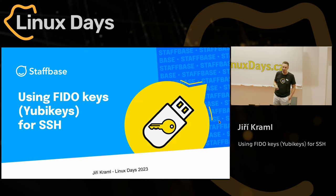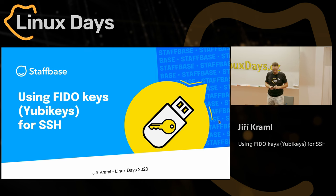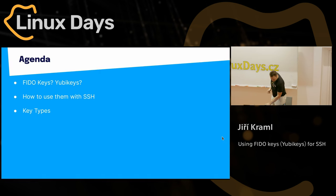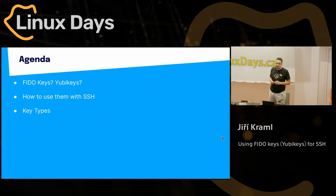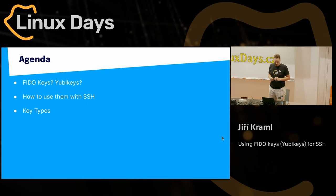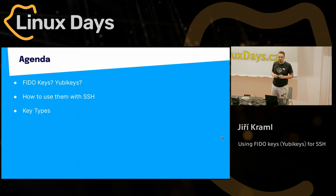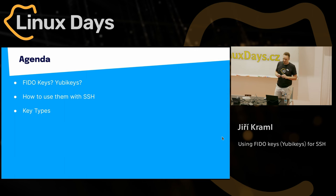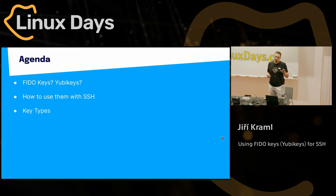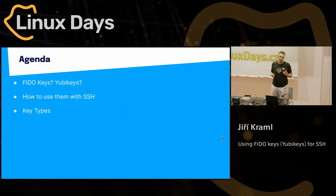I'm a software developer at Staffbase and I'd like to show how you can use these little YubiKeys to login over SSH. We only have a 20-minute time slot so I'll try to be quick. This talk goes as follows: we're not going to go into what SSH is — this is Linux days, I'm pretty sure you all know — but we will discuss what FIDO keys are, what this YubiKey is, then we'll see how we can use that with SSH. It's really easy so we're going to do it live, and at the end we discuss the two key types available because that's the most interesting configuration option.